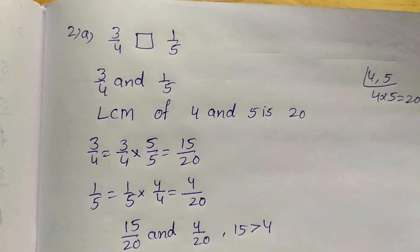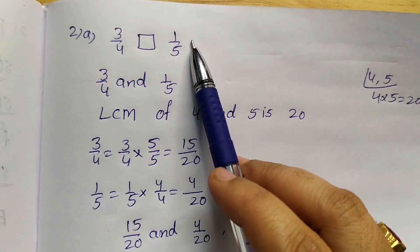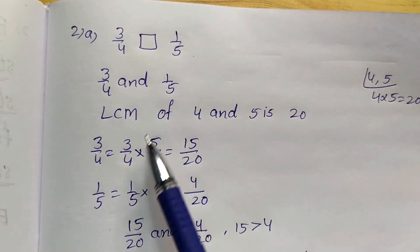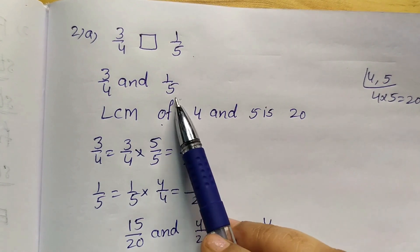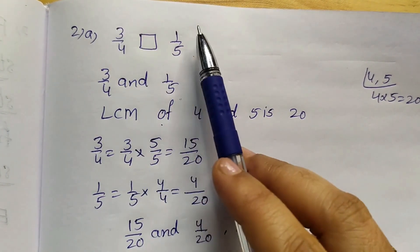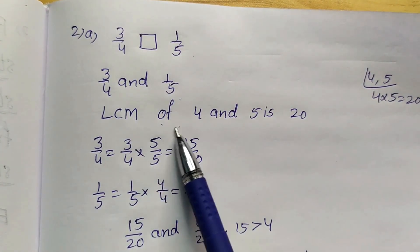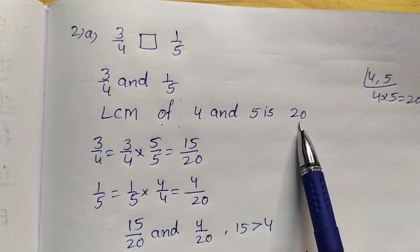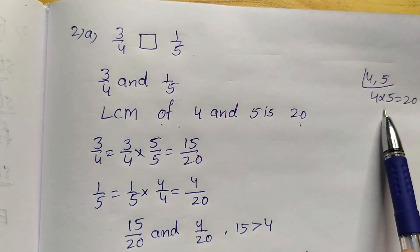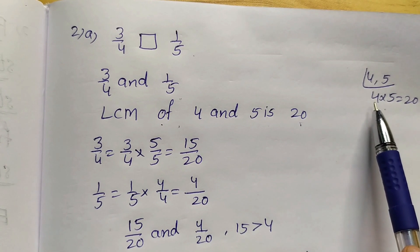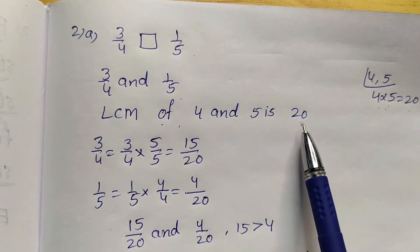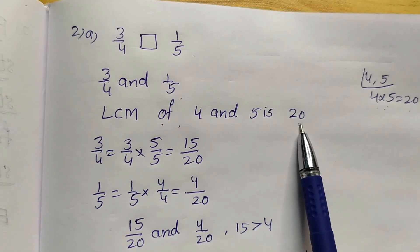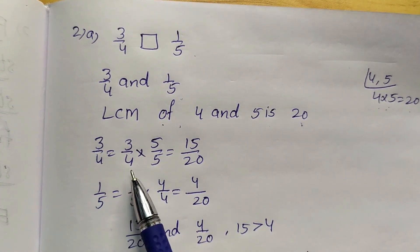Another problem: 3 by 4 and 1 by 5. We have different denominators and different numerators. So we have to find the LCM of 4 and 5. Find the LCM of 4 and 5 — that is 20. We do not have any common factor, so 4 into 5 equals 20. This is the LCM. Now convert the denominator into 20.